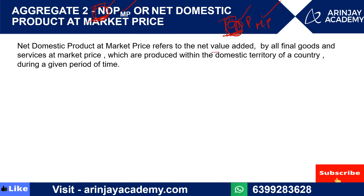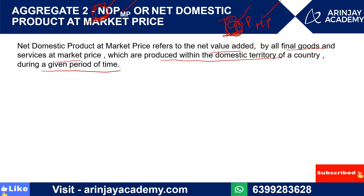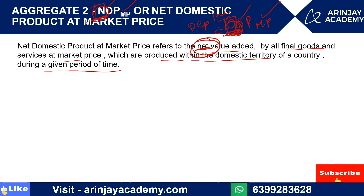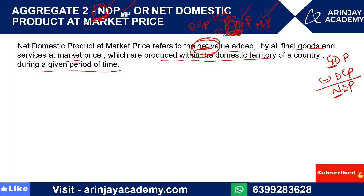NDP at Market Price refers to the net value added by all final goods and services at market price, produced within the domestic territory of a country during a given period of time. The important thing here is 'net value' — in GDP we took gross value, meaning depreciation was included. Net means depreciation is excluded. So if we have gross value and want net value, we simply minus depreciation.